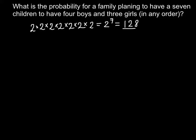Now I want to explain how to find how many combinations exist to have four boys and three girls. I'll use a formula — here is the formula we are going to use today. As you can see, I'm using factorials to solve this problem.